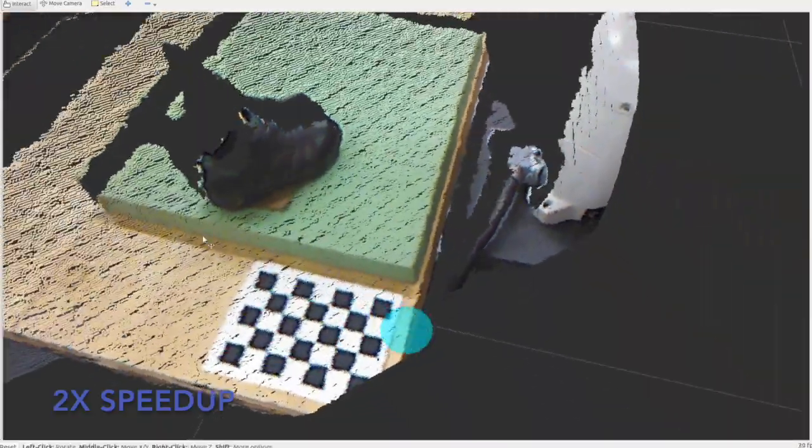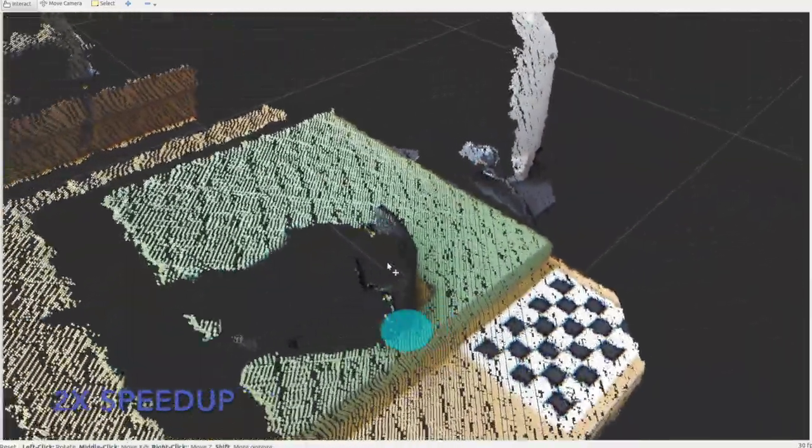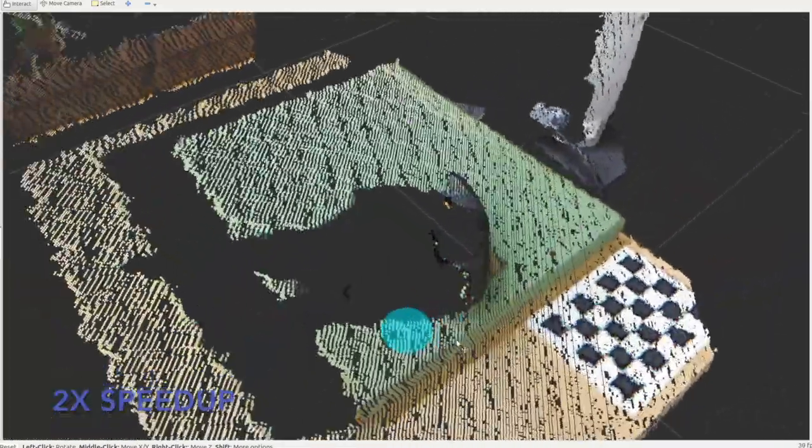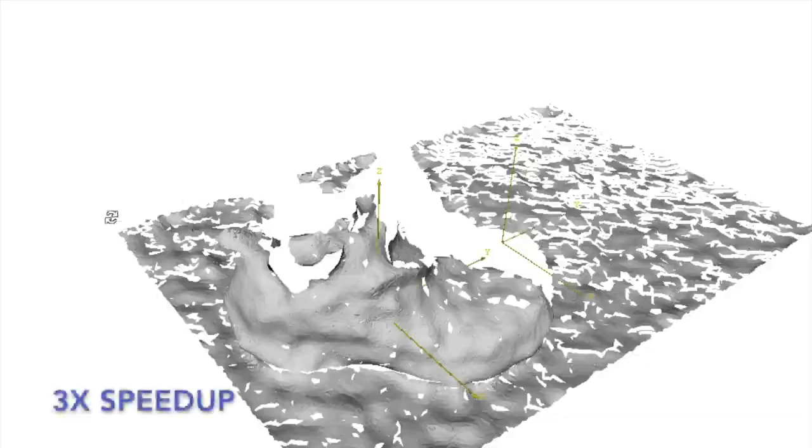This work provides an architecture to enable robotic grasp planning via shape completion. Shape completion is accomplished through the use of a 3D convolutional neural network, or CNN.